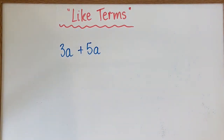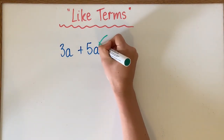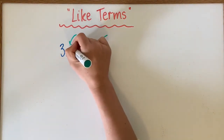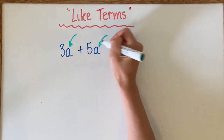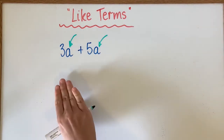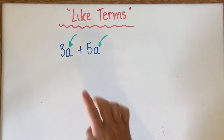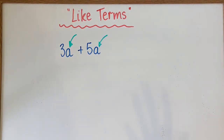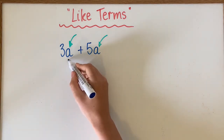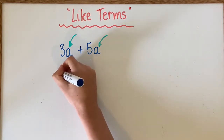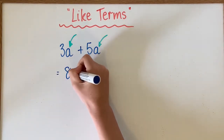This is our first example of like terms. What makes them like is that they have the same variables attached to them. You can see both of these terms have an A — they have one A each. So we can combine them together because they are alike, they are similar. If you have three A's and five A's all up, you would have eight A.